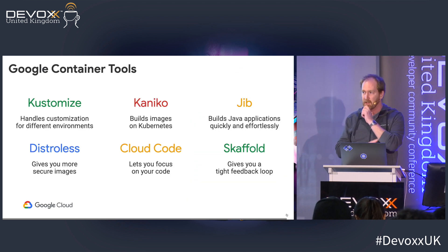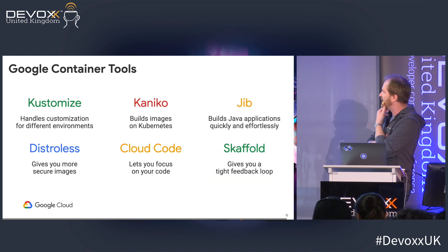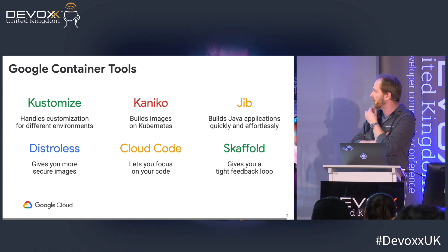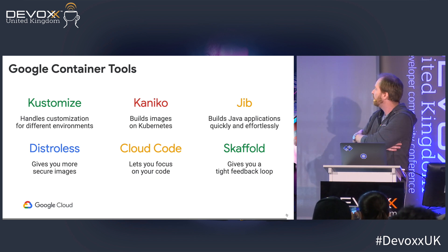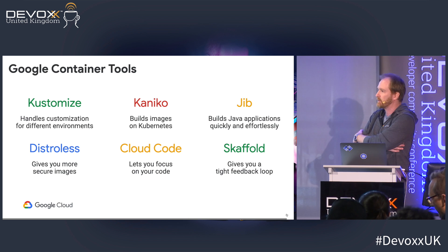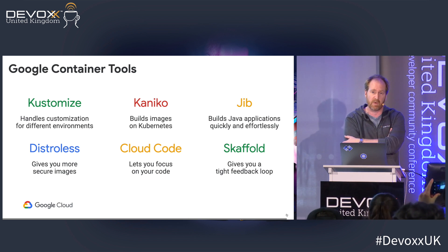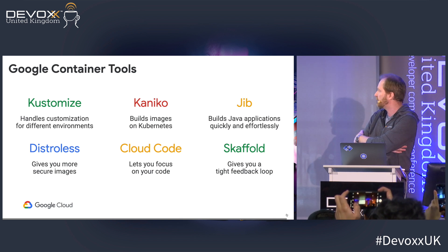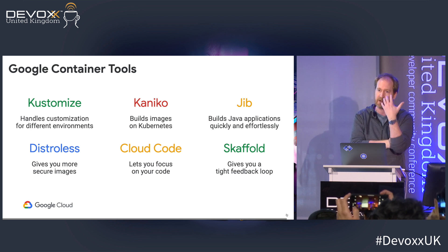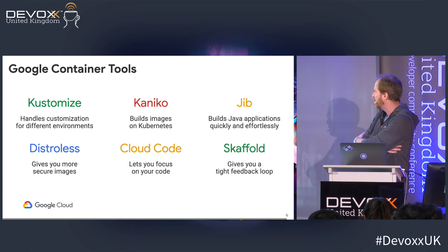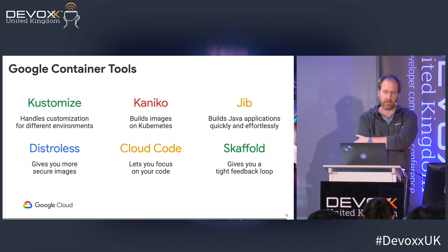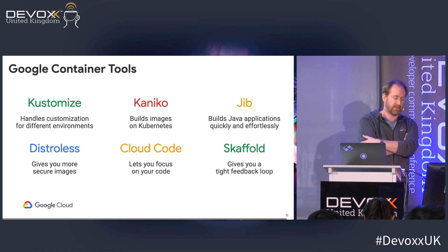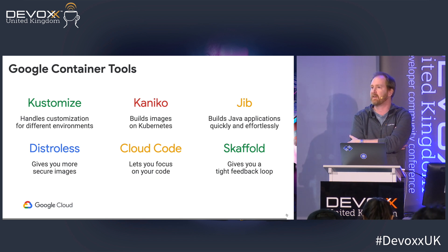Let's recap: we saw Kustomize to handle different environments, Kaniko to build images securely on any Kubernetes cluster, Jib to build applications very quickly without learning or installing Docker, Distroless for minimal secure base images, Cloud Code for developers to just focus on their code, and of course Skaffold to connect all the dots. Time's up — I'll take a couple of minutes for questions.